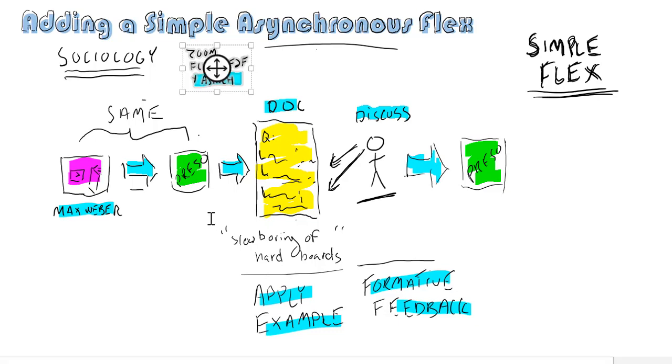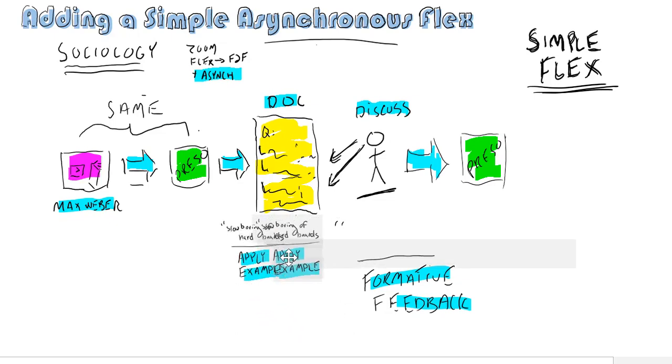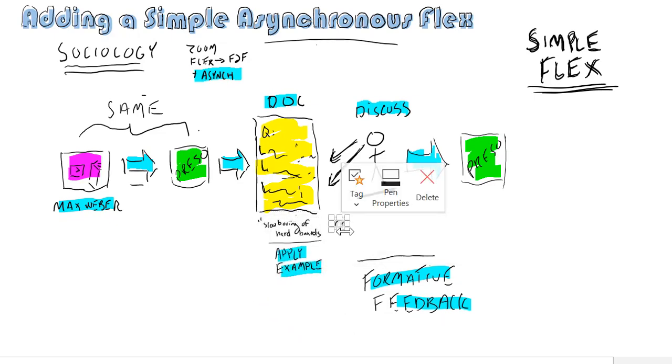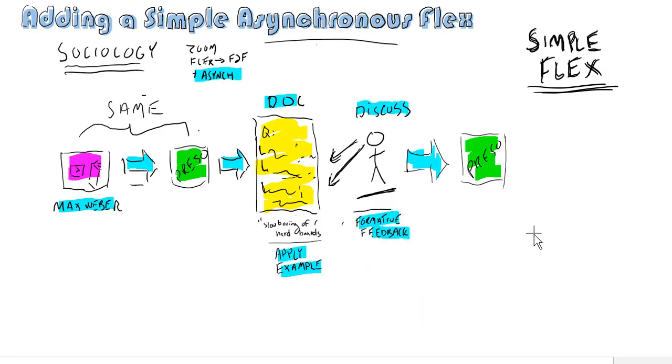I'm just moving some stuff here to get some space. One of the things I really want to show is if you do a simple flex, people keep on saying it's like you're doing two preps, one for the asynchronous and one for the synchronous students. But it's not actually that way at all, and the reason why is this principle of reusability.